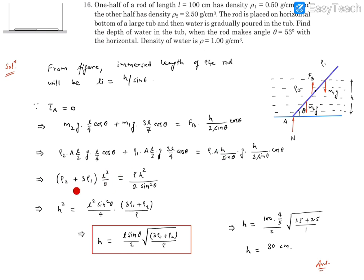So it becomes ρ₂ plus 3ρ₁ is equal to, on this side you'll find ρ into h² and on the bottom you'll find 2 into sin² θ.